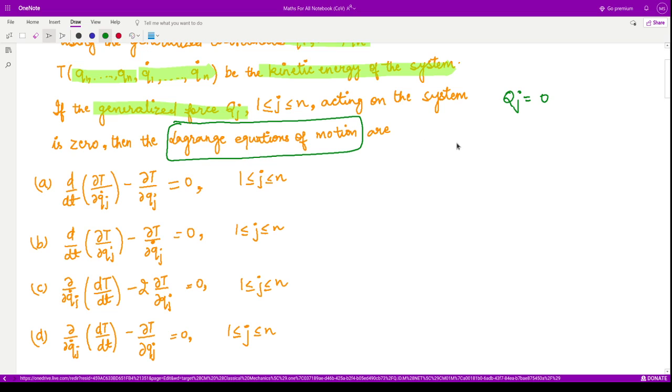In general, we have the Lagrangian, given by L, which is basically the difference of kinetic energy and potential energy.